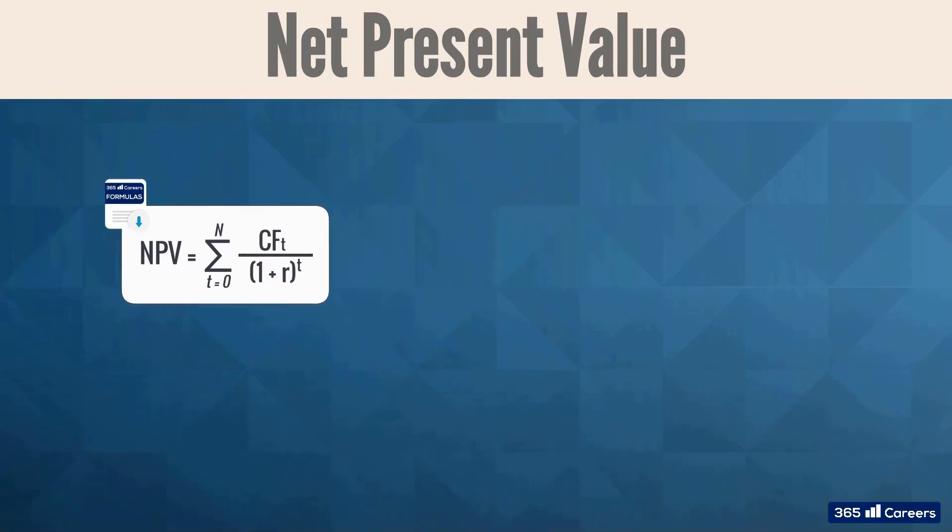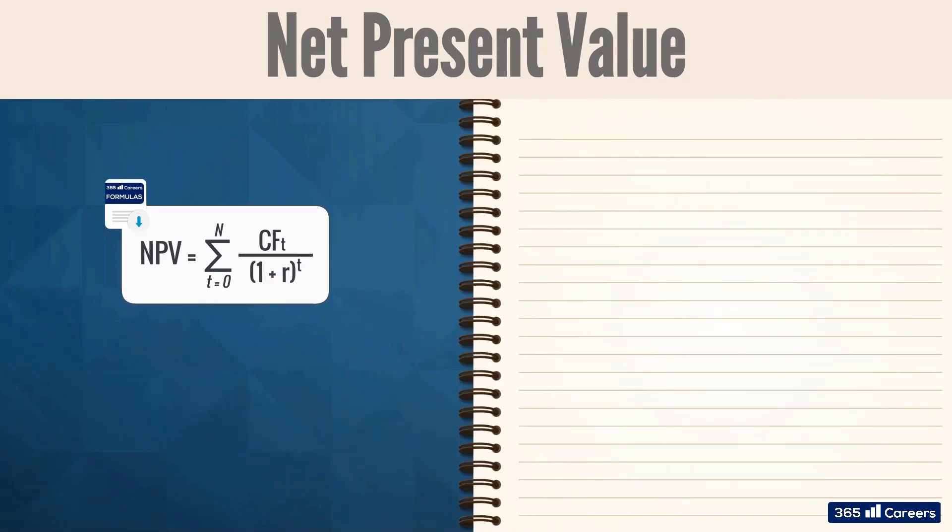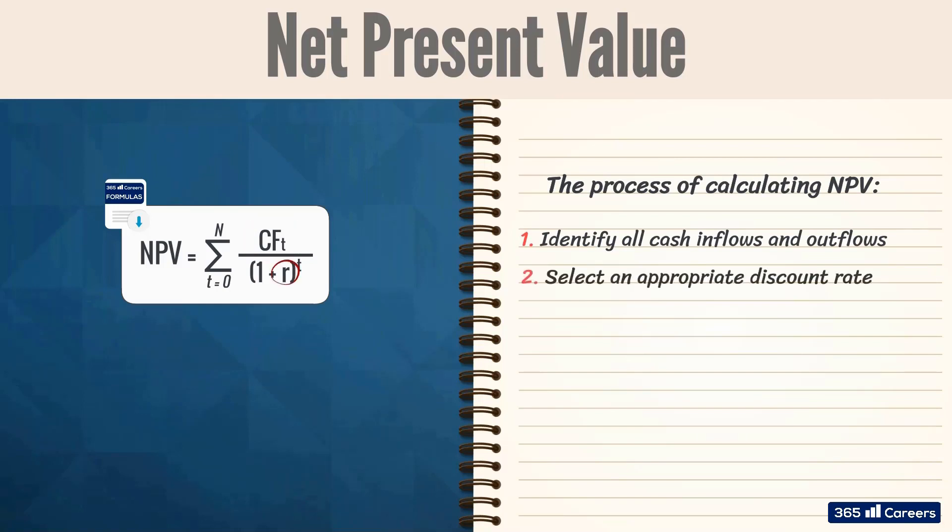As you can see from the formula, calculating the NPV of an investment goes through a process which consists of four steps. First, we need to identify all inflows and outflows related to the investment. Then, we must choose an appropriate discount rate, which in turn allows us to obtain the present value of the cash flows.